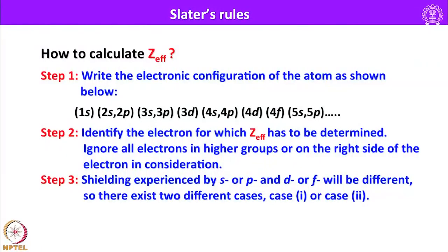How to calculate effective nuclear charge? We have to follow three simple steps. First, one has to write down the electronic configuration of the atom as shown — 1s, 2s, 2p, 3s, 3p, 3d, 4s, 4p, 4d, and so on — with parentheses at regular intervals, which have some significance.